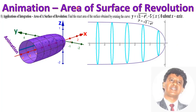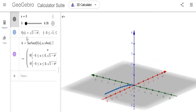The next animation is area of surface of revolution. Find the exact area of the surface obtained by rotating y equals the square root of 1 minus e to the x, where x is between negative 5 and 0, rotated around the x-axis. That is y equals square root of 1 minus e to the x, and we rotate this around the x-axis.